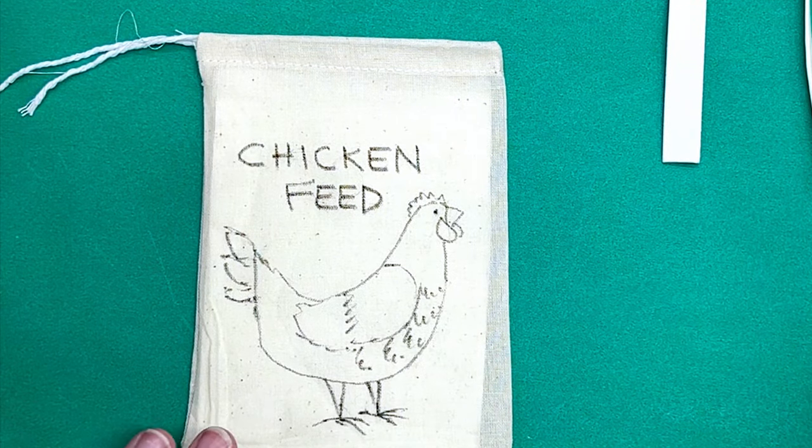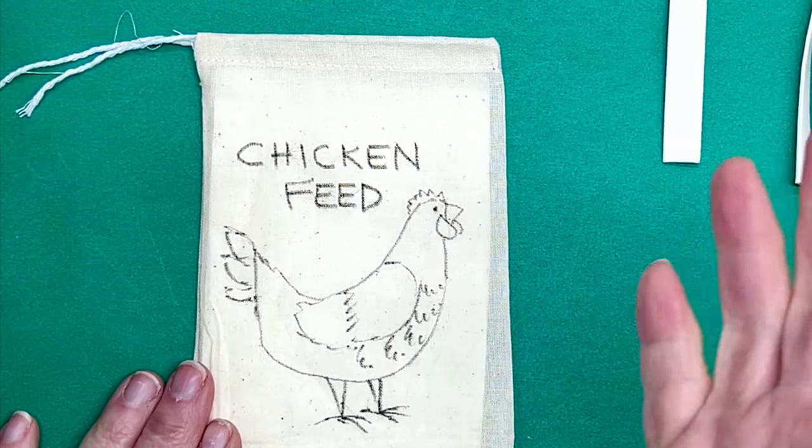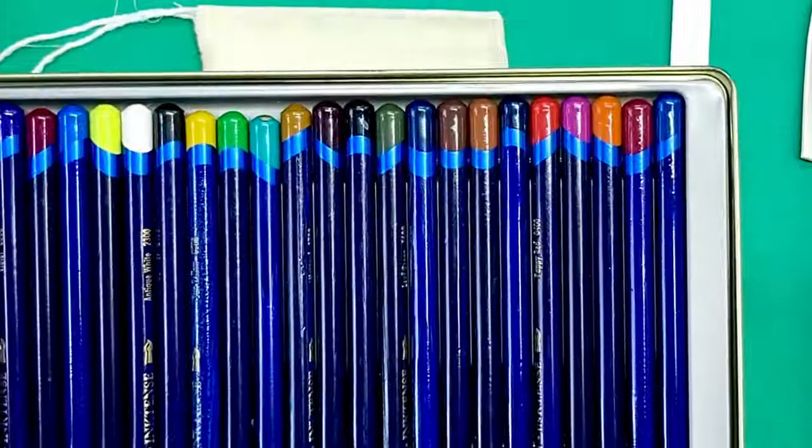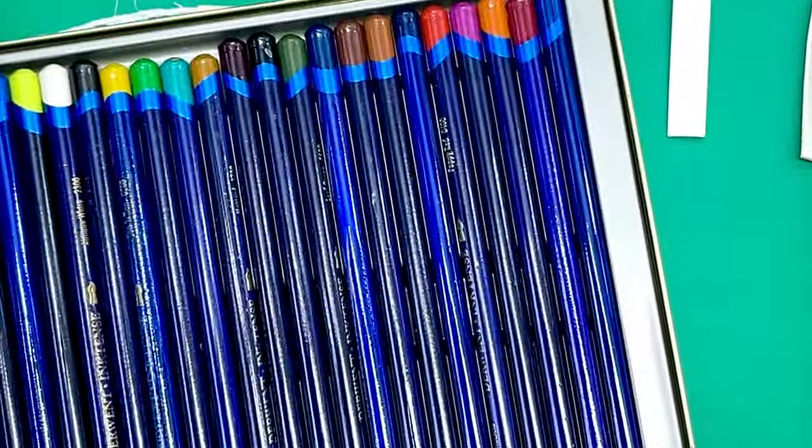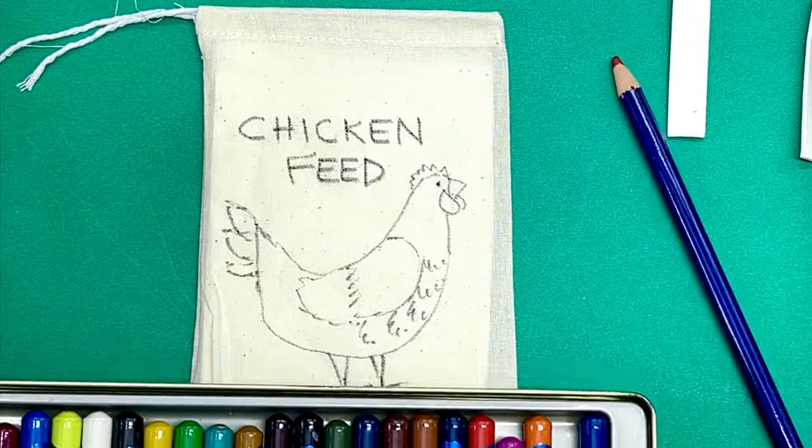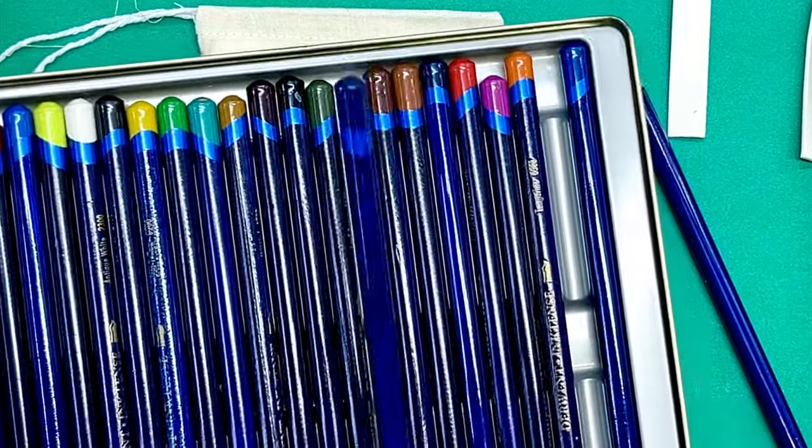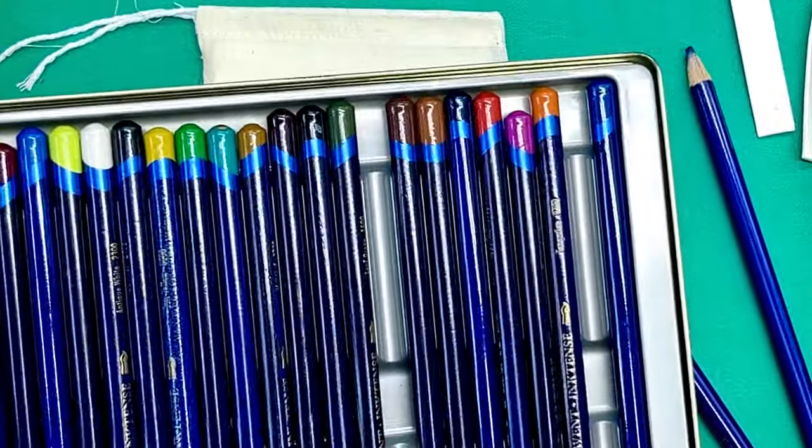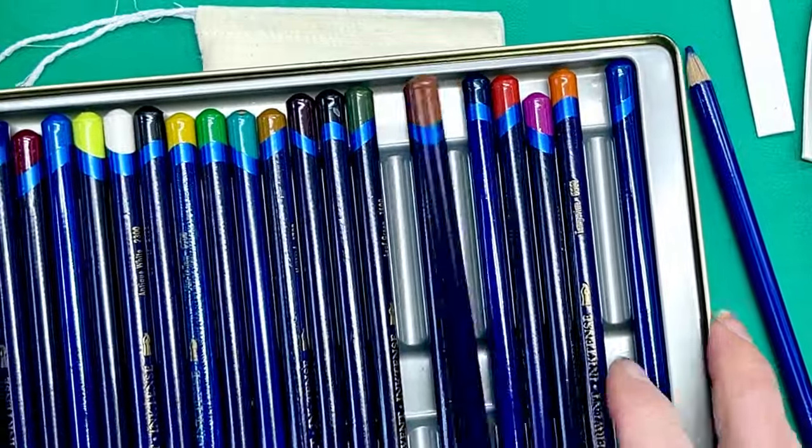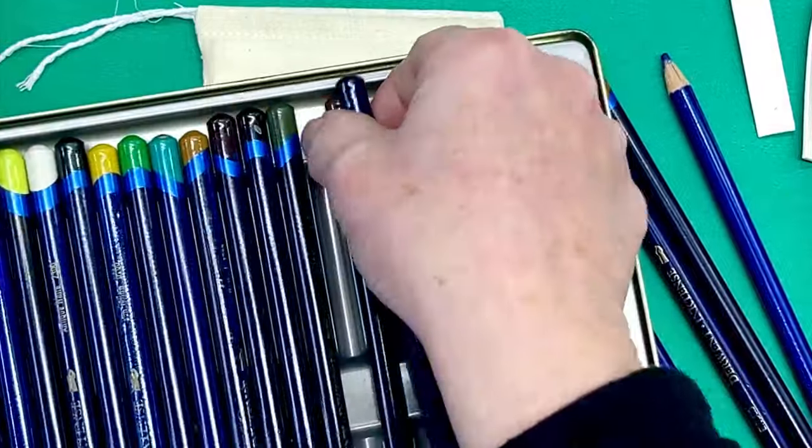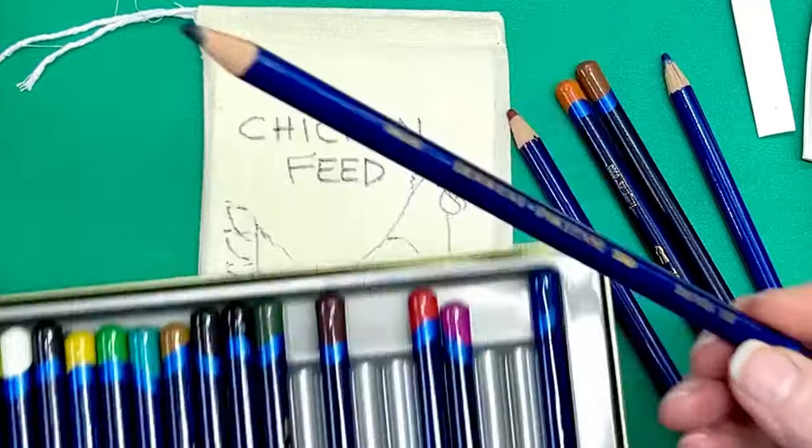To color it, I'm going to be using the Inktense pencils. So I'm going to grab this kind of red color for her waddle. And then I think I want a blue and maybe a brownish color and an orangey color. Oh, the dark blue is right here under my hands. Deep Indigo.